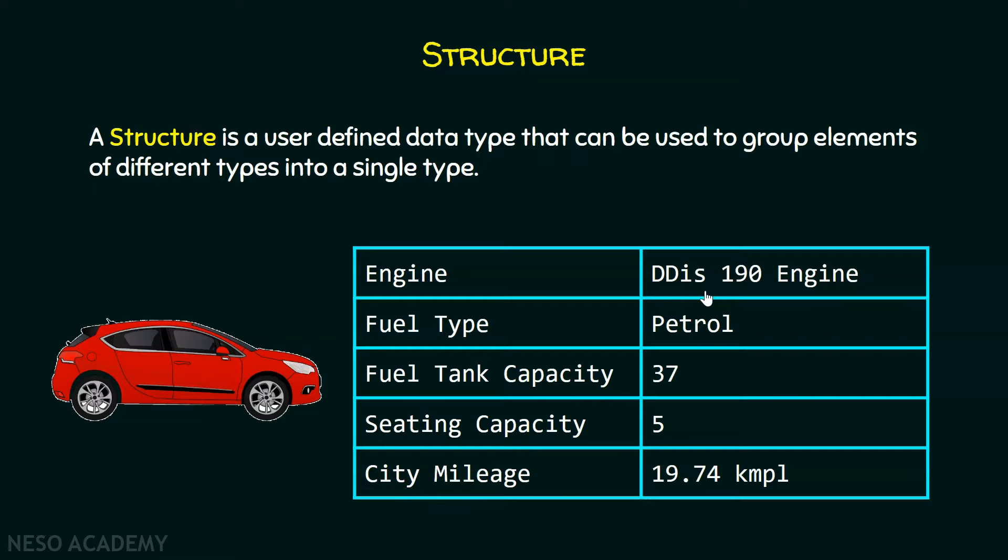Here we can see the engine is DDIS 190 Engine. Fuel type is petrol. Fuel tank capacity is 37 liters. Seating capacity is 5. And city mileage is 19.74 kilometers per liter.